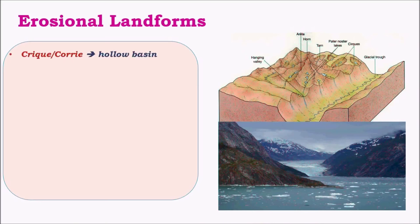The first one is a cirque or corrie, which is a hollow basin covered on three sides by the slope of a mountain and open on one side for water to flow. Once the ice in these cirques melts, it gives rise to a feature called a tarn, which is similar to a cirque but contains water instead of ice.